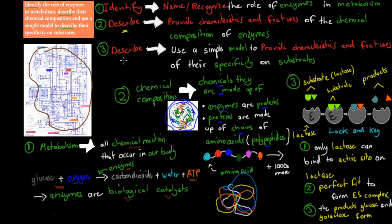The next verb was also 'describe': use a simple model to provide characteristics and features of their specificity on substrates. We're going to use a lock and key model. The idea is that we have specificity — for example, lactase enzyme works only on the lactose substrate. The substrate is the thing that's going to be broken down. Only lactose can bind to the active site of lactase, because the active site is specific for that substrate. Once they hook on, in the lock and key model it's a perfect fit, and then the enzyme breaks the substrate apart — that's its function.